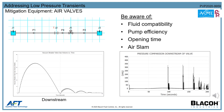The last challenge to consider is a phenomenon called air slam. This occurs when the air valve is closing and air is leaving the system too quickly, causing the valve to slam shut when the fluid columns come back together — creating a secondary high pressure transient event. One method of preventing this is to select a multi-stage air valve that controls the air release via an orifice.